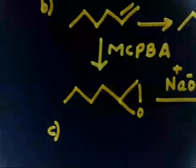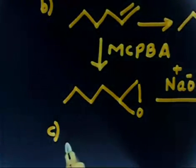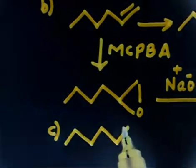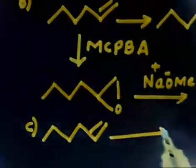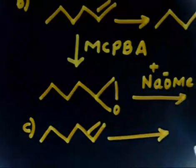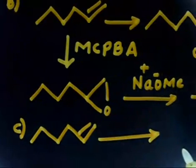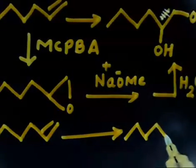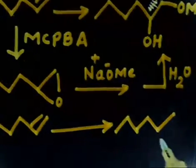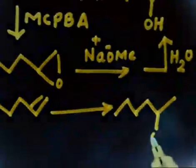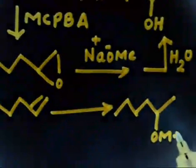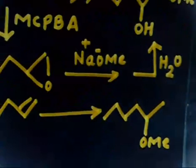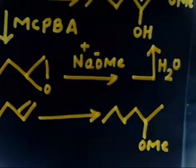Now let us discuss the next part — Part C. Same starting material: 1-hexene. From this I want to prepare 2-methoxy-1-hexanol. This time the methoxy group is at carbon two, so this is 2-methoxy-1-hexanol — OH is at carbon one and OMe is at carbon two.